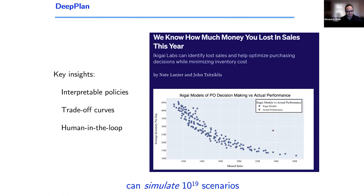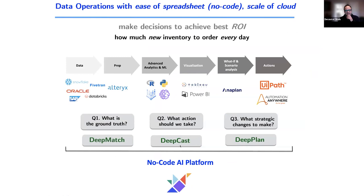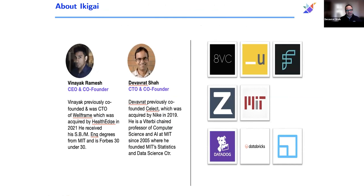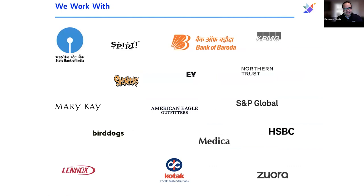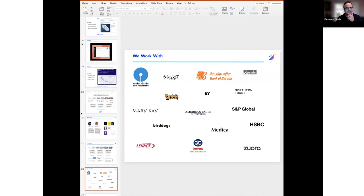The no-code platform enables you to do all these things together to answer an end-to-end decision problem of how much inventory to order every day, making both strategic and technical decisions. With a few more minutes left, let me show you the Ikikai Labs tool we've built and a demonstration of it. This is a company we founded three years ago with a great set of investors.